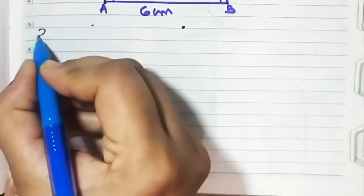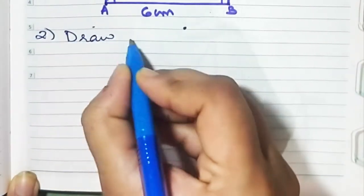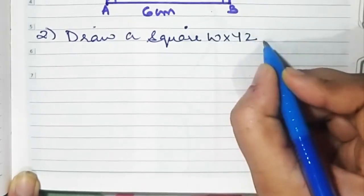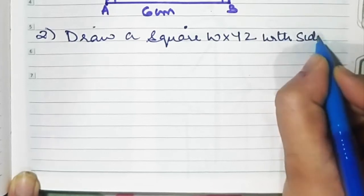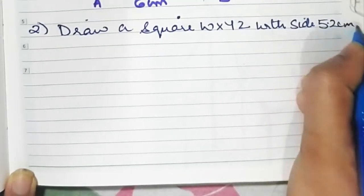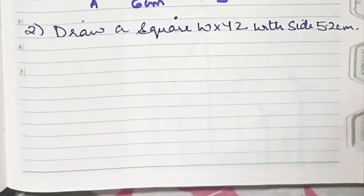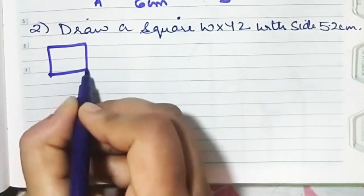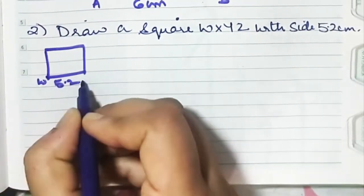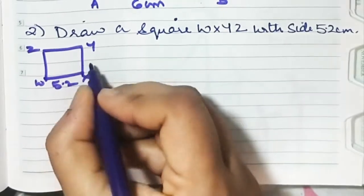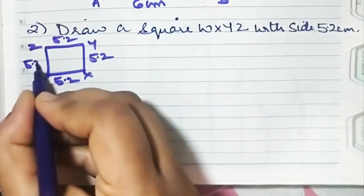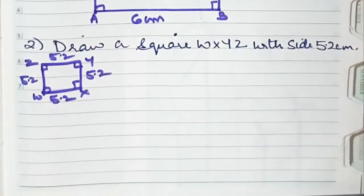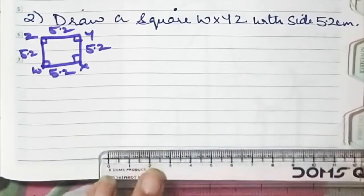Let's do sum number 2. Draw a square WXYZ with side 5.2 centimeters. Side is 5.2. Let's do the rough figure first. Square WXYZ — one side is 5.2, all the sides are going to be 5.2, and all the angles are going to be 90 degrees. Let's begin. The base is going to be 5.2.